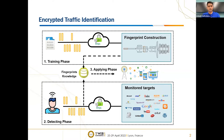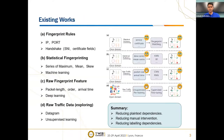In the training phase, enough labeled data is used to train and build fingerprint knowledge. In most cases, the knowledge is a trained machine learning or deep learning model. In the test phase, the trained model is used to detect targets in untrained traffic to evaluate performance. Finally, the model is applied to detect traffic online and identify the target applications.